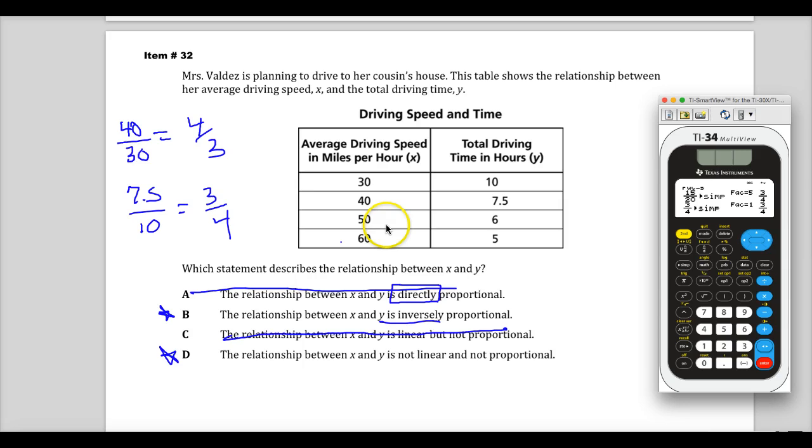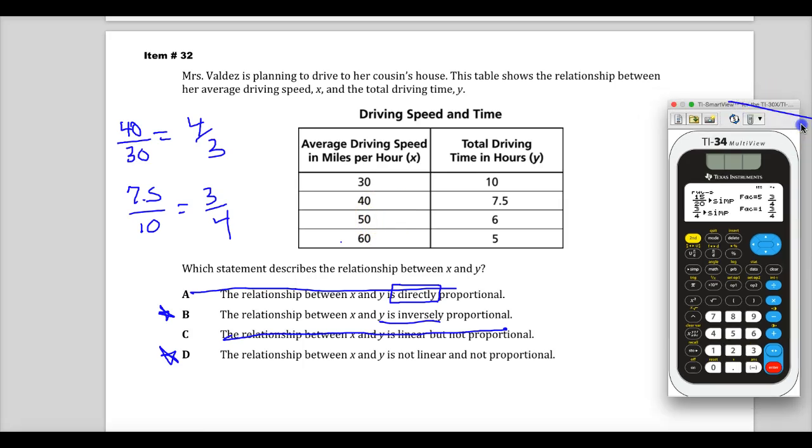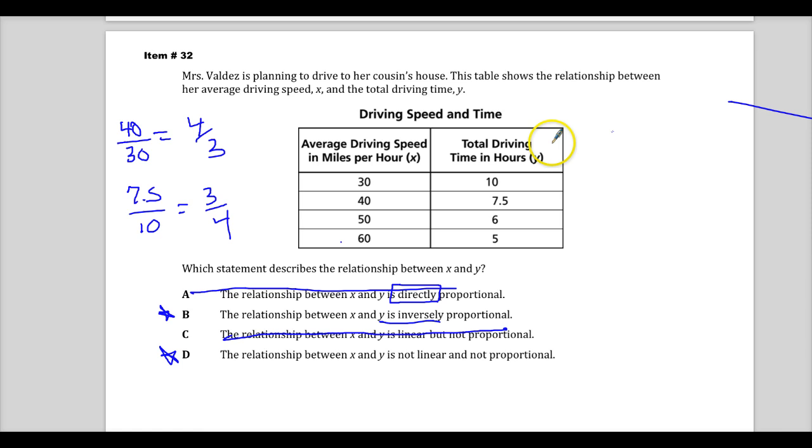40 and 50. Sorry about that. So 40 divided by 50 will give me 4 over 5. And if I use my calculator to do, sorry, I should have done 50 divided by 40. You'll get 5 over 4. Or if I use my calculator to do 6 divided by 7.5, shockingly, you end up with 4 fifths. Hmm. Interesting. Let's do the last one. 60 over 50 gives you 6 fifths. 5 over 6 gives you 5 sixths.